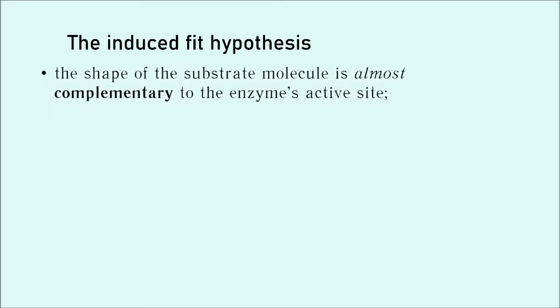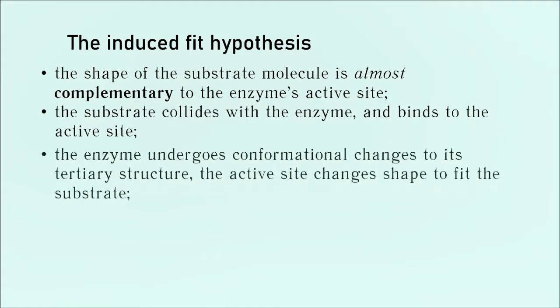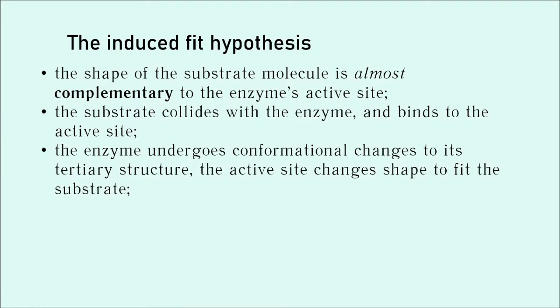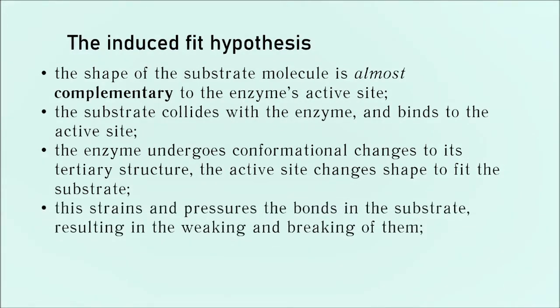If we are answering an exam question then this is what we say. The shape of the substrate molecule is almost complementary to the enzyme's active site. The substrate collides with the enzyme and binds to the active site. Then, key point, the enzyme undergoes conformational changes to its tertiary structure. In this way the active site changes shape to fit the substrate. Now they're going to be complementary. Now because the enzyme changes its 3D shape, its tertiary structure, as a result we get a straining and pressuring of the substrate and hence its bonds get weakened and broken.